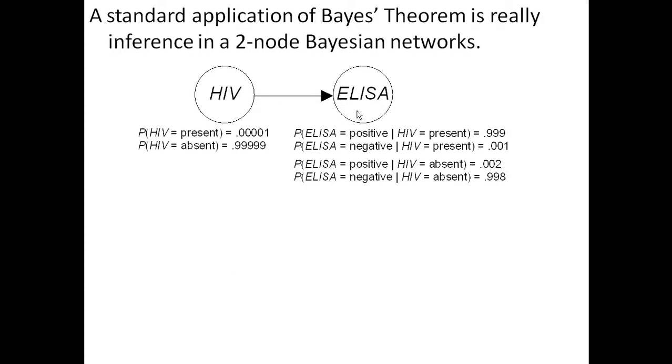And we have an arrow from HIV to ELISA. Because the test result is causally dependent upon whether you have HIV. And these are the conditional distributions. This is the true positive and false positive rates that we looked at before. The probability of ELISA being positive given HIV present is .999. The probability ELISA equals positive given HIV equal absent equal .002.